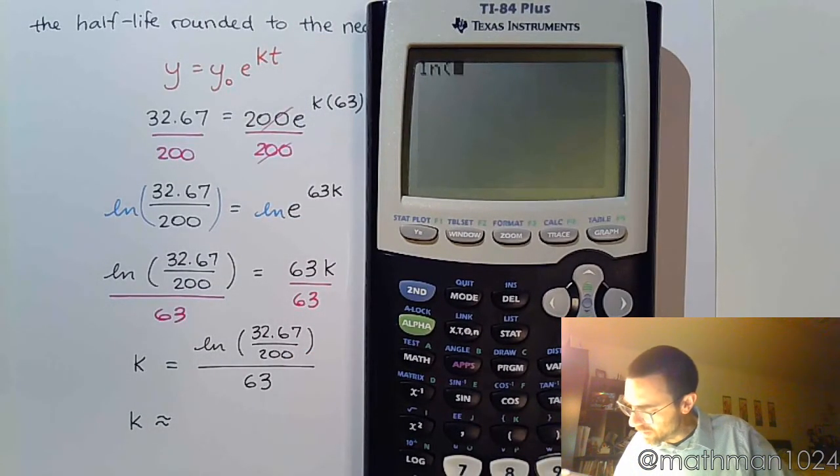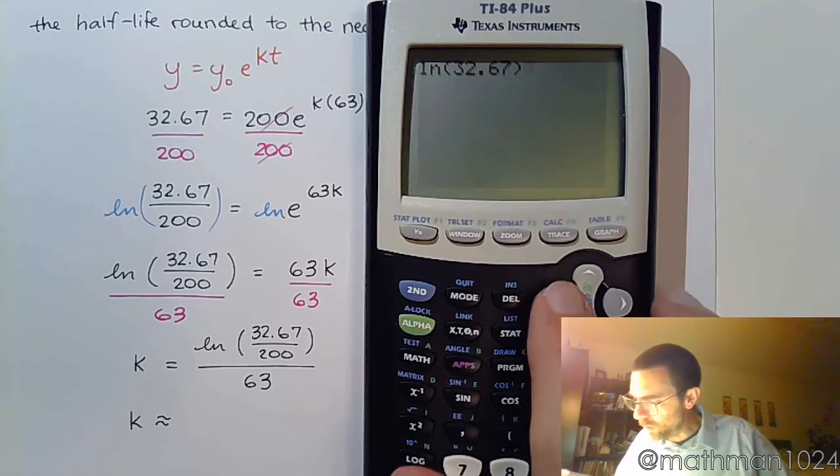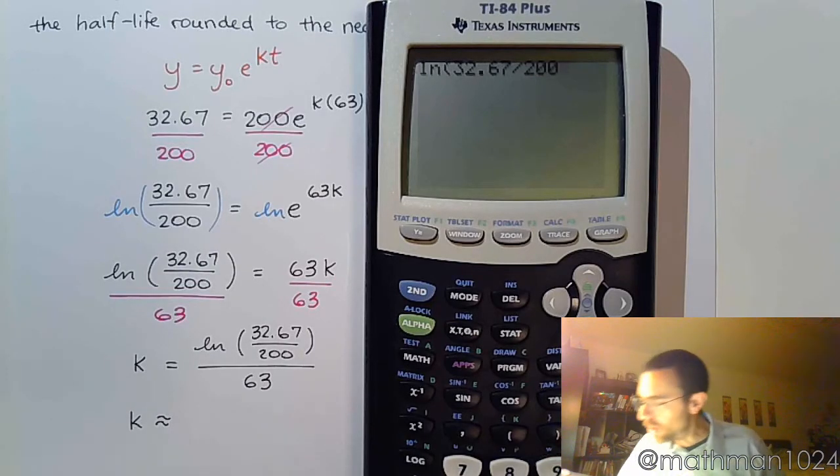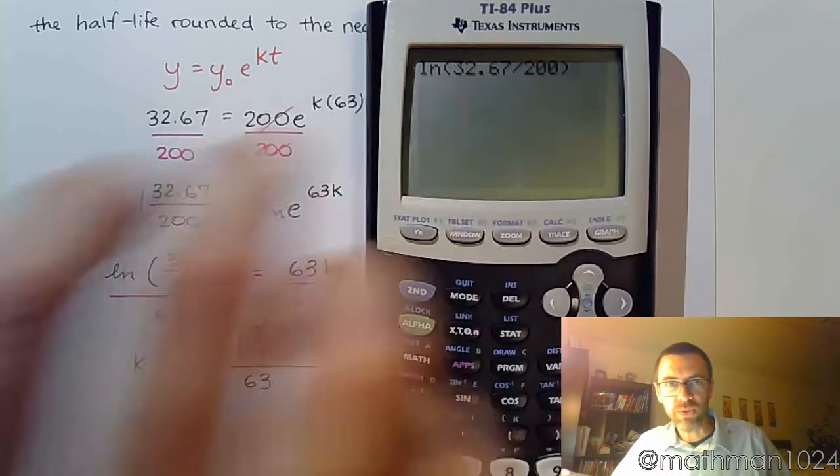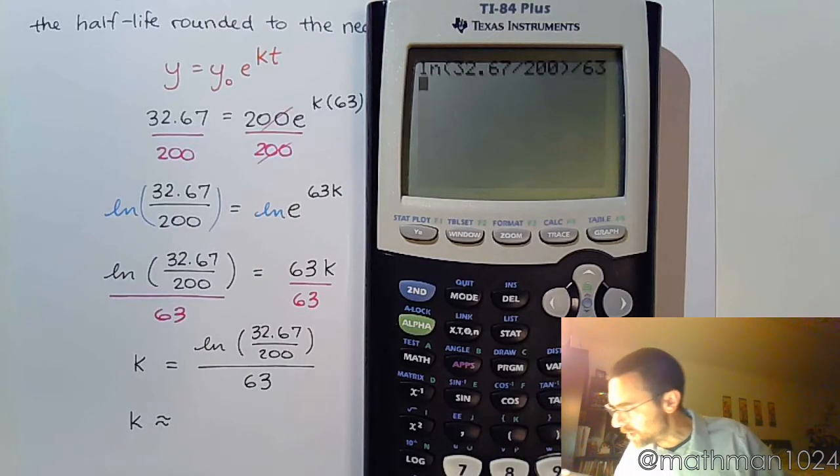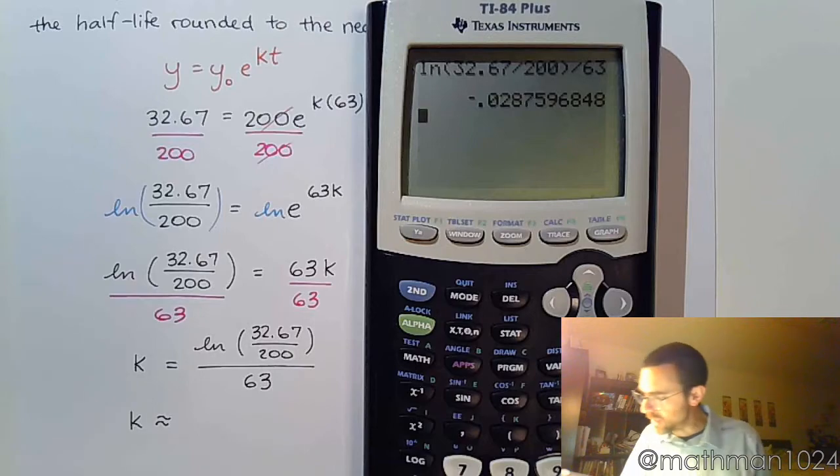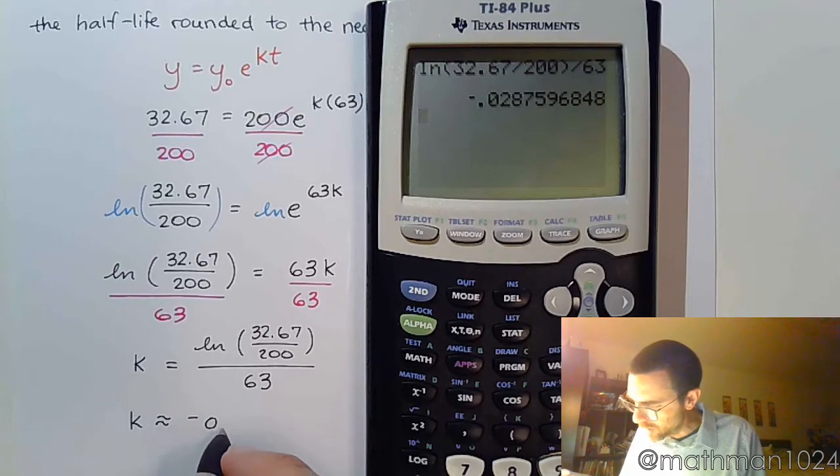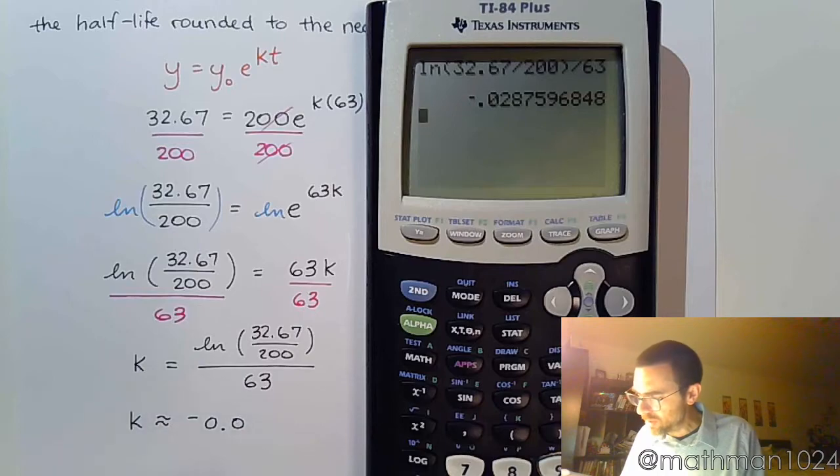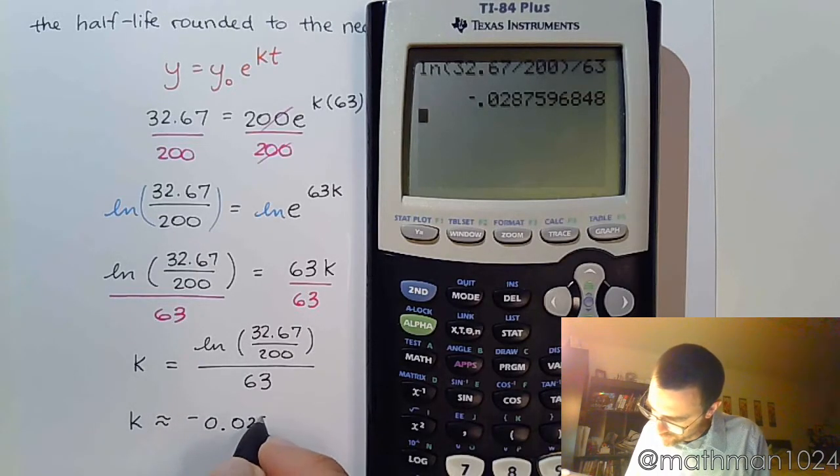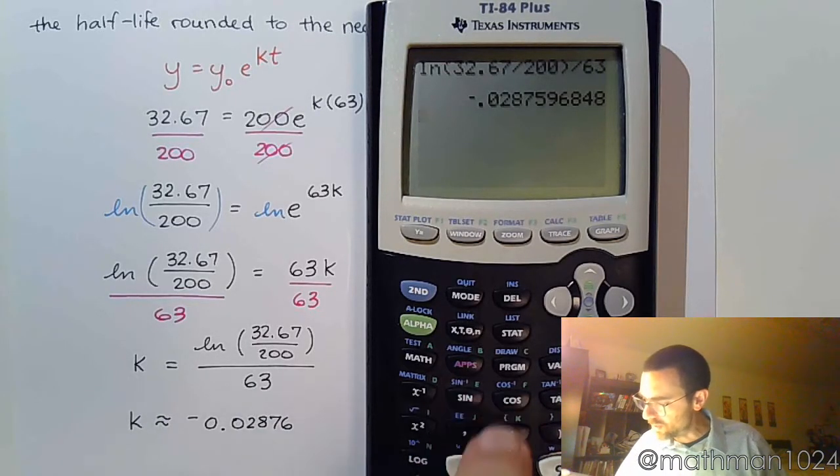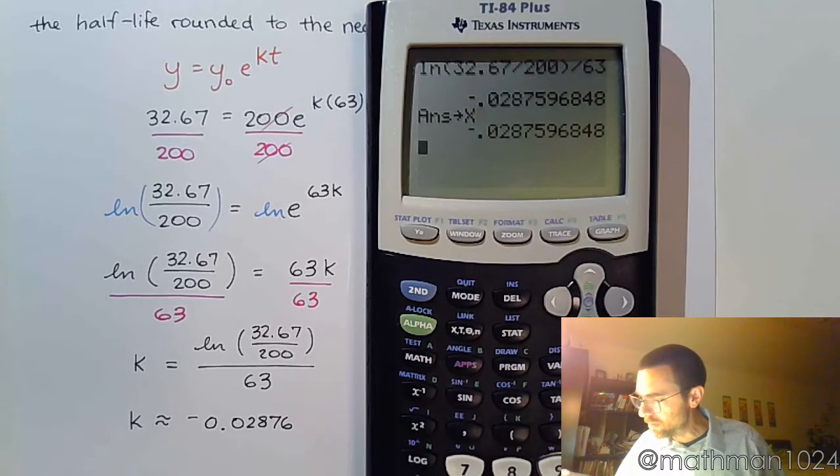All right, so we've got the natural log of 32.67 divided by 200. Almost closed the parentheses too soon. All of this is inside that set of parentheses for the natural log. And then divide by 63. All right, so my K is negative 0.02876. Now I'm going to go ahead and store this in for X so I can use it later.